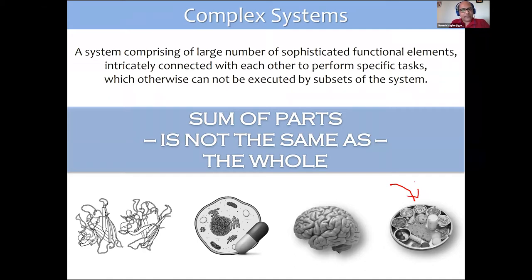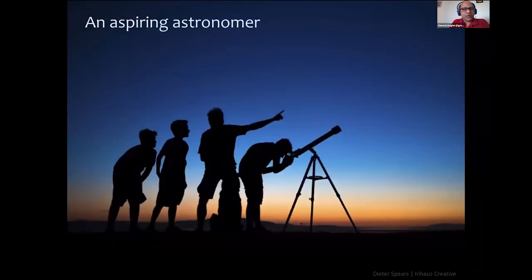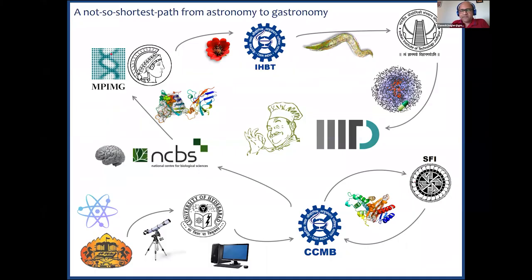These systems are all made up of interconnected entities and exhibit emergent properties — the sum of the parts is not the same as the whole. Given that I'm known for computational gastronomy research, you might wonder whether I've been a foodie all along. But as a teenager I was an aspiring astronomer. It's been a journey from physics to computational techniques, to a PhD in computational biology at CCMB Hyderabad, postdocs at NCBS Bangalore and Max Planck, and finally the discovery of this area called computational gastronomy — not the shortest path from astronomy to gastronomy.